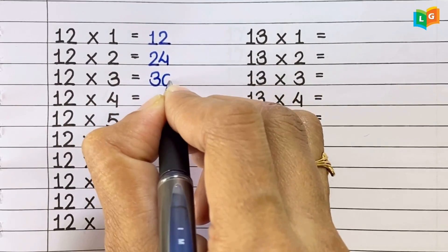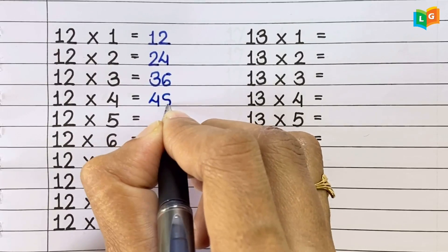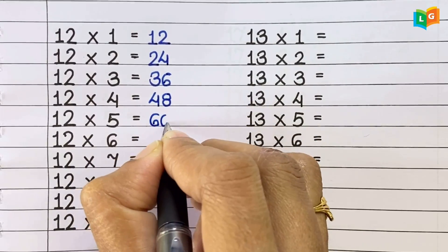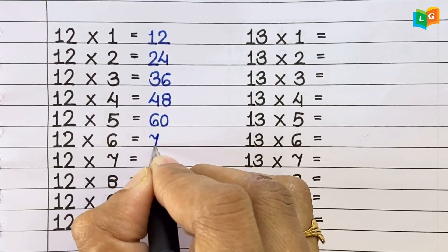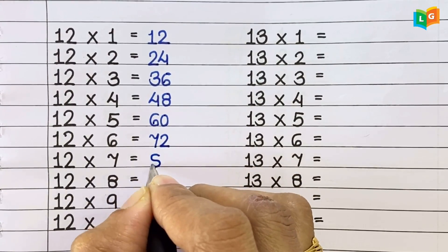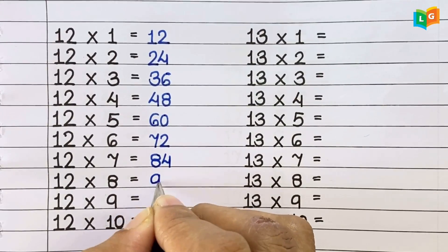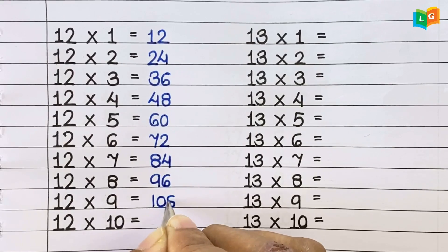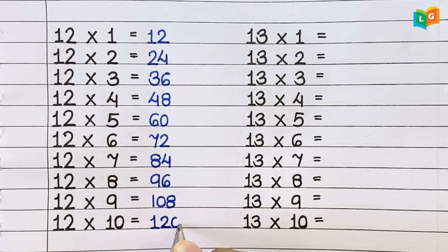Now let's see table of 12. 12 3s are 36, 12 4s are 48, 12 5s are 60, 12 6s are 72, 12 7s are 84, 12 8s are 96, 12 9s are 108, 12 10s are 120.